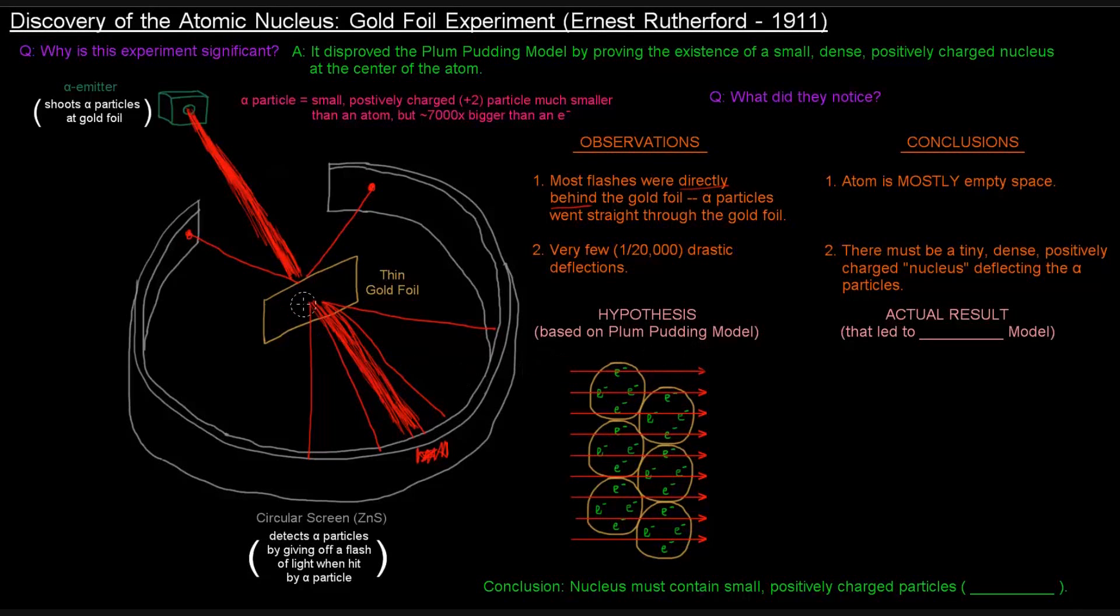So, when they saw that there was deflections like this, where the alpha particle would actually go backwards in the direction that it came from, that was pretty crazy to them. That was pretty crazy that this situation even happened. So, what that led them to believe is that there must have been something in the atom that was dense enough and large enough to deflect the alpha particle backwards.